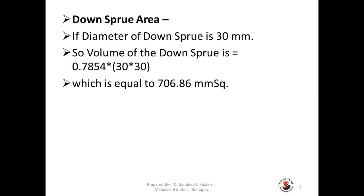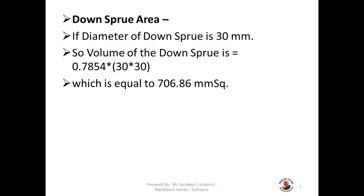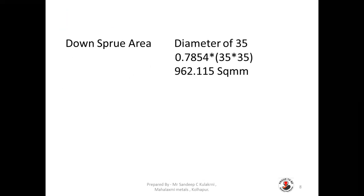The downspout area formula is 0.7854 into the square of the diameter. Let us take another example where the diameter of the downspout is 35 mm. The downspout area will be 0.7854 × 35 × 35, that is 962.115 square mm. So this way you can calculate the downspout area.